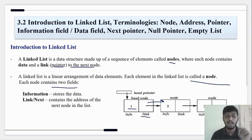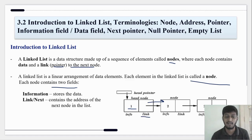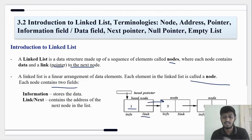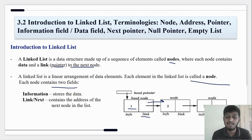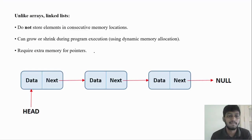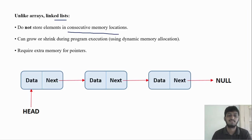A linked list is a linear arrangement of data elements. Each element in the linked list is called a node, and each node contains two fields: one is information, one is link, and the pointer points to the next node. Unlike arrays, linked lists do not store elements in consecutive memory locations.